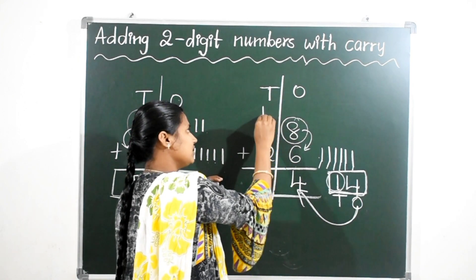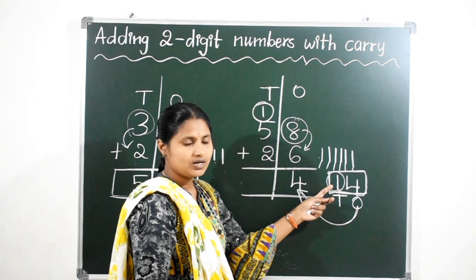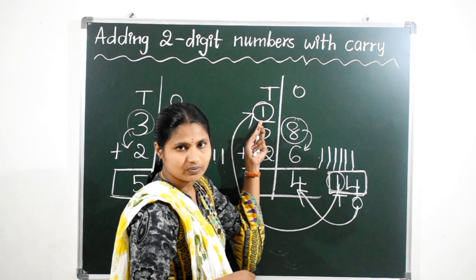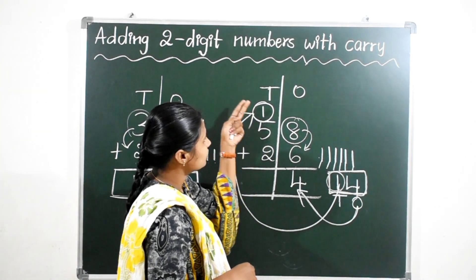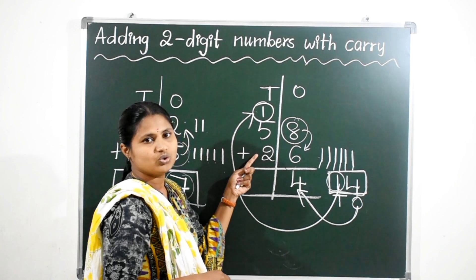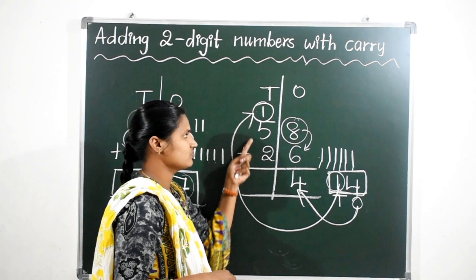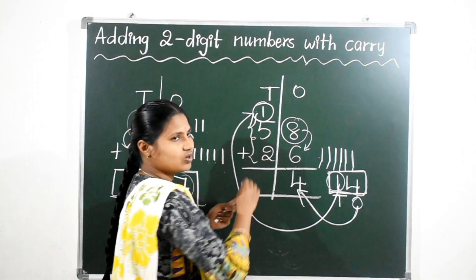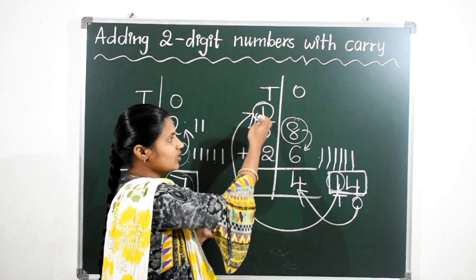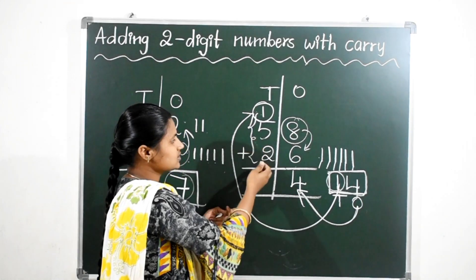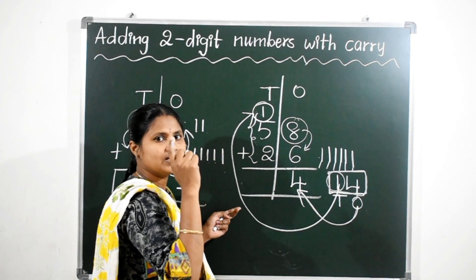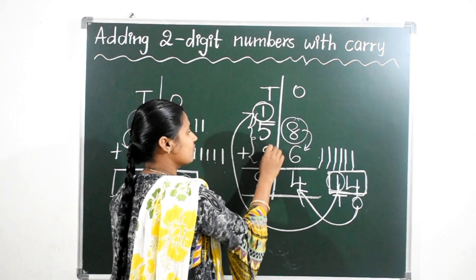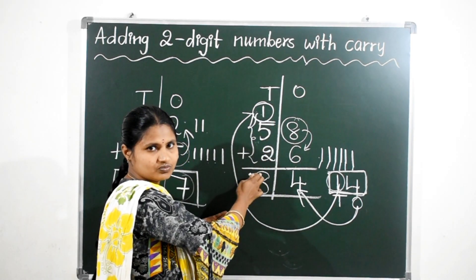The 10s place value is 1. This 1 ten — write it in the 10s place as carry over. Now here we have to add these 3 numbers in the 10s place: 1, 5, and 2. 1 plus 5 is 6, and 6 after 2 more numbers: 7, 8. So the answer is 8 in the 10s place — giving us 84.